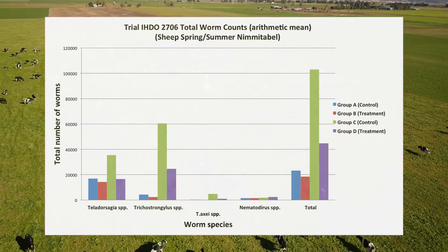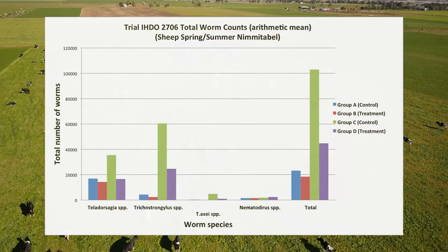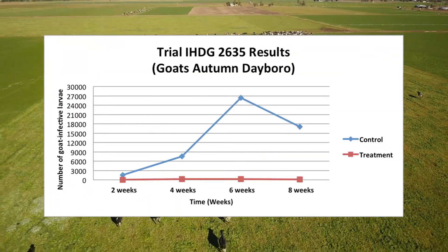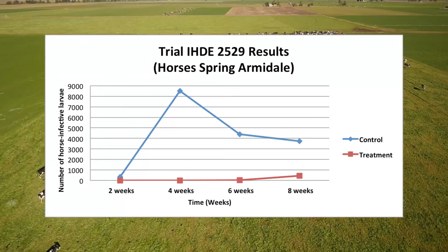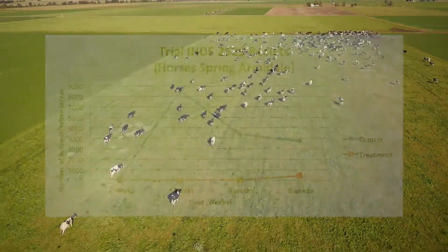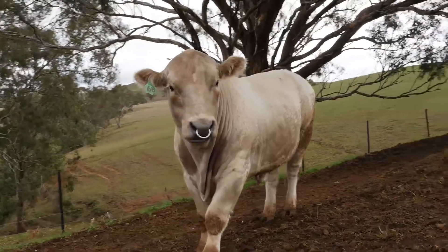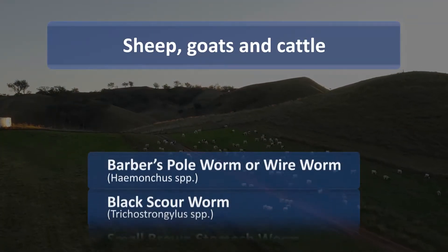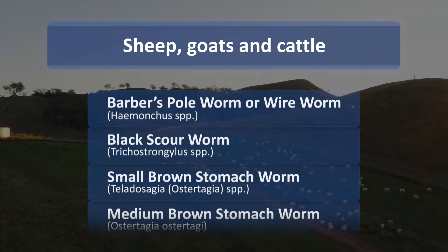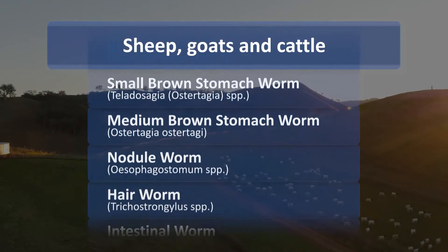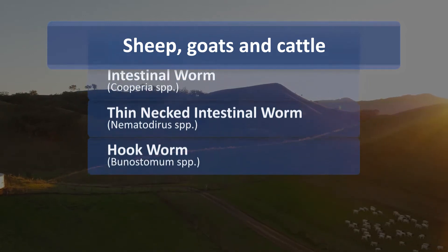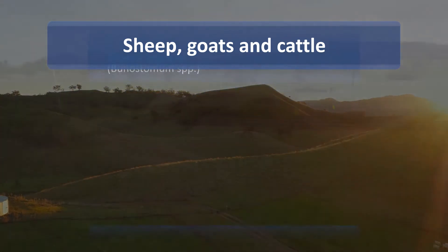Australian field trials have shown significant reductions in pasture infectivity in sheep, cattle, goats and horses in different climatic zones and seasons, with similar results in zoo animals. Duddingtonia flagrans targets a variety of nematodes including, for sheep, goats and cattle: barber's pole worm or wire worm, black scour worm, small brown stomach worm, medium brown stomach worm, nodule worm, hair worm, intestinal worm, and thin-necked intestinal worm and hook worm.